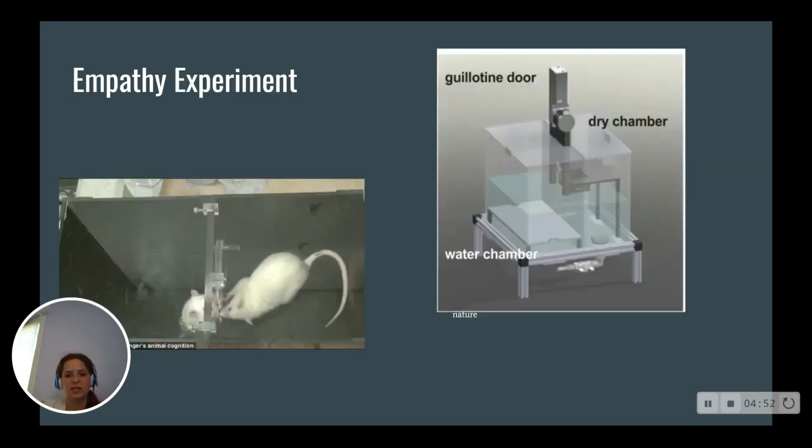There's an apparatus which has two chambers. One is the water chamber and has the target rat. The other is the dry chamber and has the observer rat. Separating them is a guillotine door. And in the dry chamber, where the observer rat is, he has the choice. He can stay on the platform, or he can go down into the water, release the chamber door, and save the other rat in the drowning chamber. And what they found, 80% of the time, the rats were indeed willing to go down and risk possible drowning so that they could save their little rat friend.